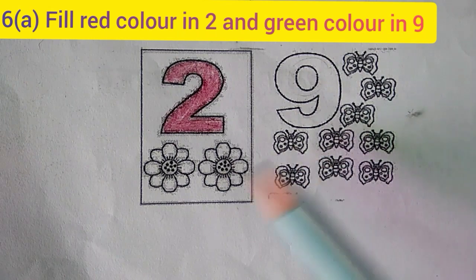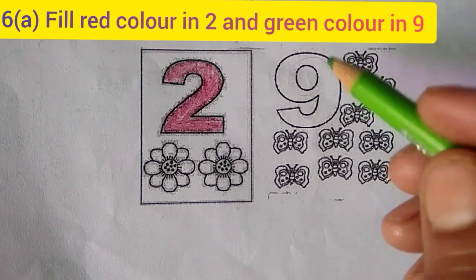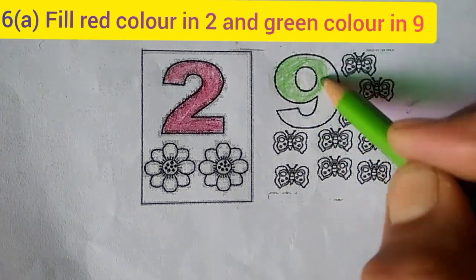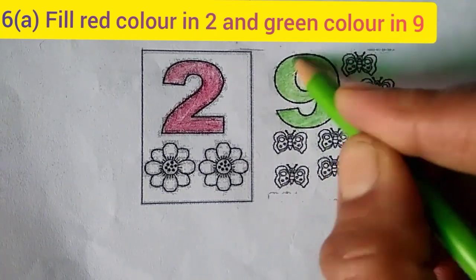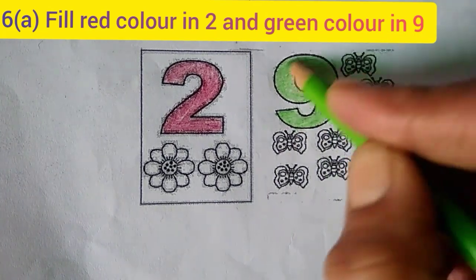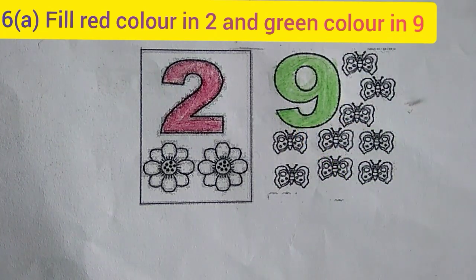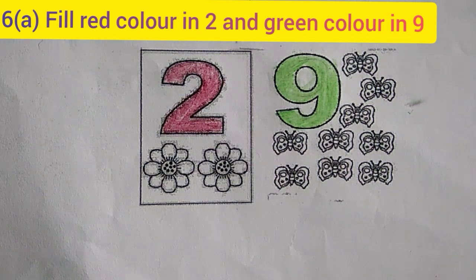Now we fill the color in 9. Like 2, we fill the green color in 9 very carefully. Like this. Very carefully and very beautifully. You have to color the 9. So we have completed the color in 2 and 9.